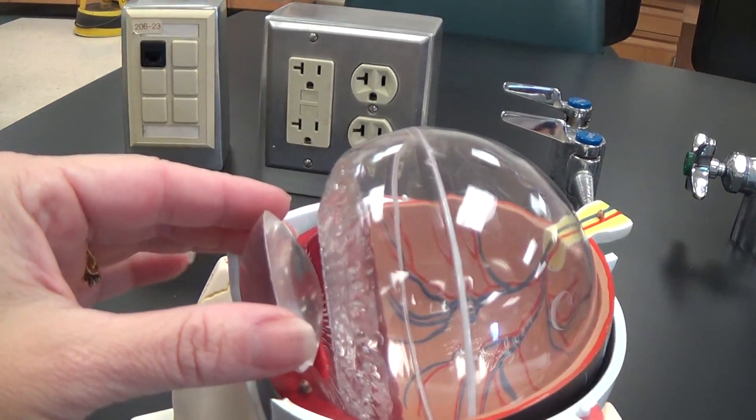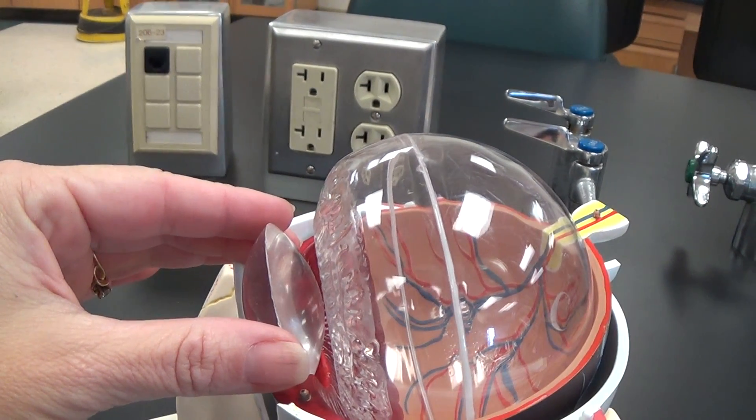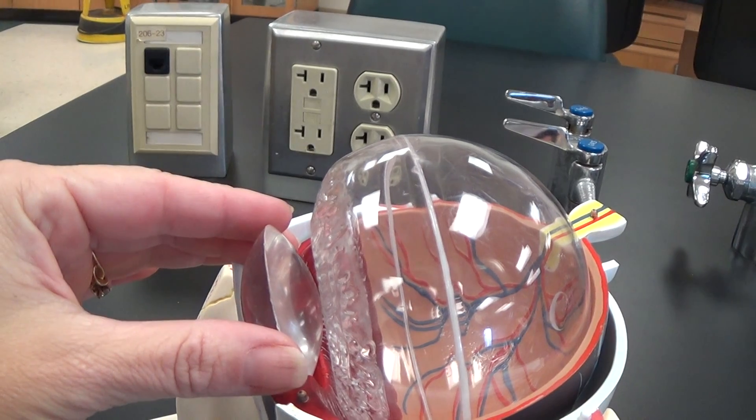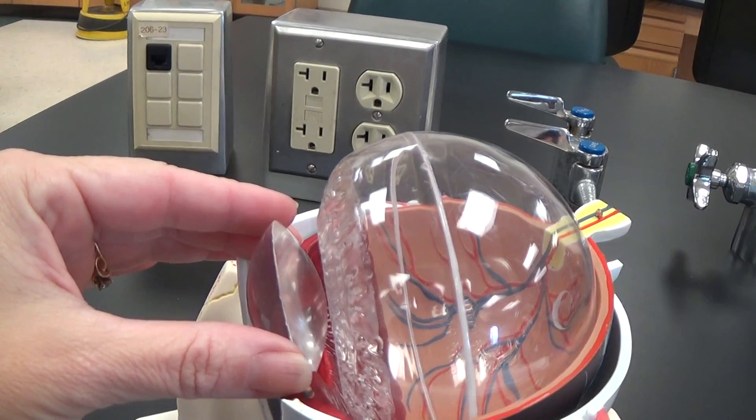This is the lens of the eye, and remember it's connected in here and changes shape using the ciliary body or ciliary muscle to contract, and that will cause changes to the suspensatory ligament.